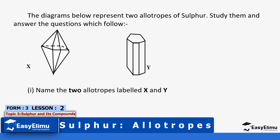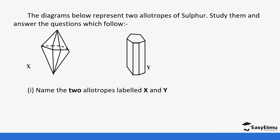The diagrams below represent two allotropes of sulfur — study them and answer the questions. Name the two allotropes: the first is rhombic sulfur and the second is monoclinic sulfur.